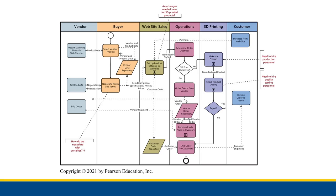This is a business process diagram that shows how Best Bikes creates value based on inputs from customer orders and vendor products. A fun exercise would be to make a value chain for Best Bikes and compare it to the business process — the value chain being what a business does to make value, and the business process being how it works with inputs and outputs to create that value. In the next video, we'll bring all of this together and connect it back with information systems.